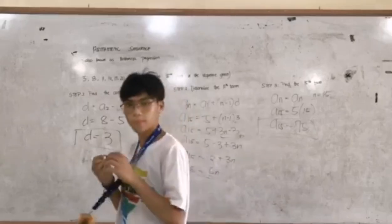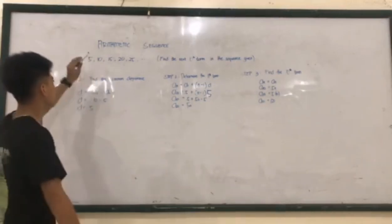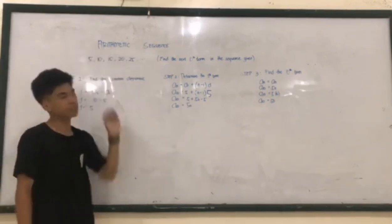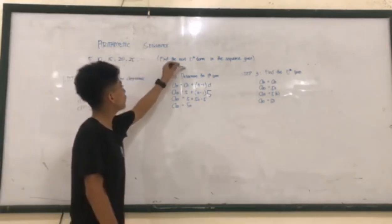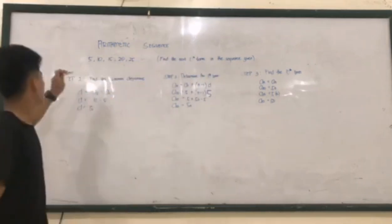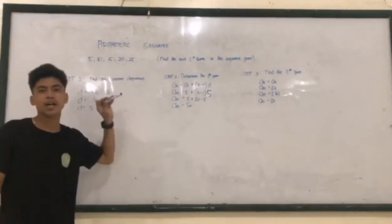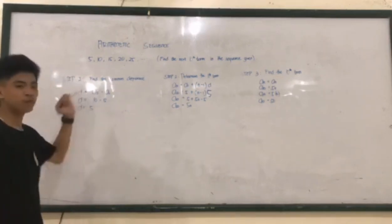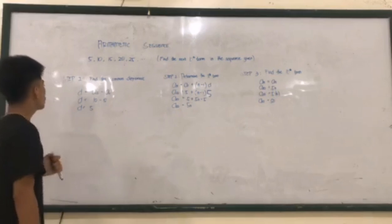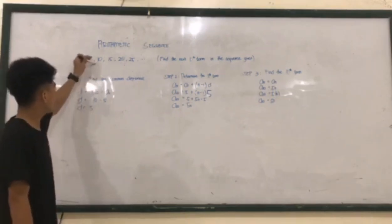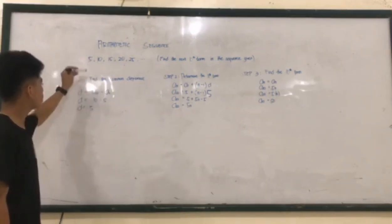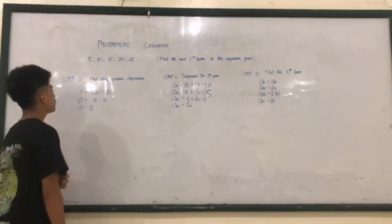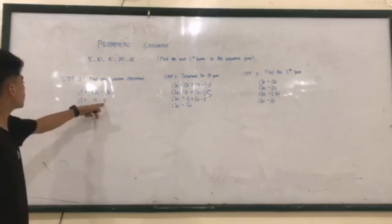This is another example of an arithmetic sequence: 5, 10, 15, 20, 35, and so on. We're going to find the 10th term in the sequence. Step one: find the common difference. The formula is d equals a sub 2 minus a sub 1. The value of a sub 2 is 10 and the value of a sub 1 is 5. We subtract: 10 minus 5 equals 5.